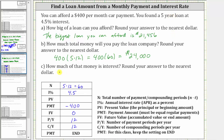For part C, how much of that money is interest? To determine the interest paid, you take the total amount of money paid and subtract the loan amount, which gives us $24,000 minus the loan amount of $21,456, which is equal to $2,544. So over the five-year loan, you would end up paying $2,544 of interest.